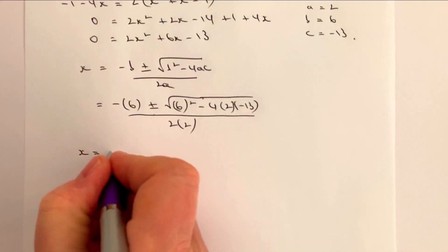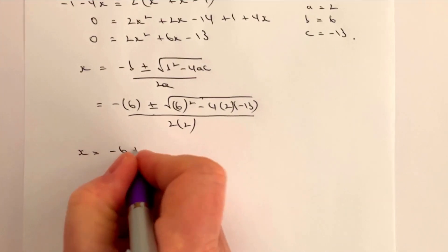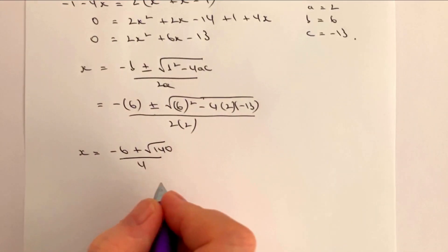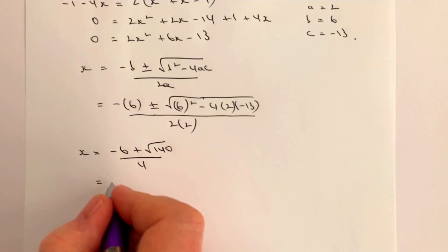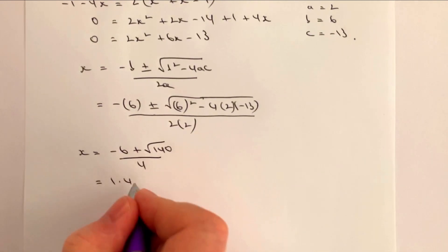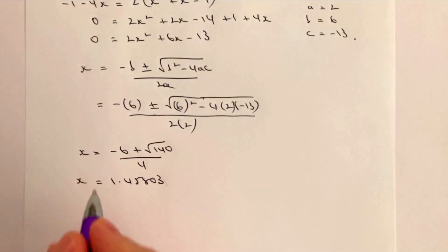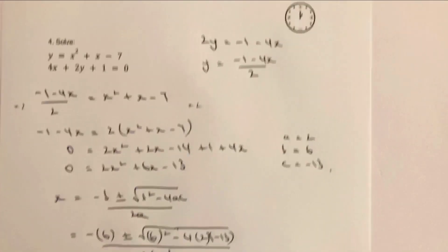You're going to get when x equals minus 6 plus the root of 140 all divided by 4, and that's basically that x equals 1.45803. Okay, and then you would take that value of x and you would substitute it into this awful formula at the top here.